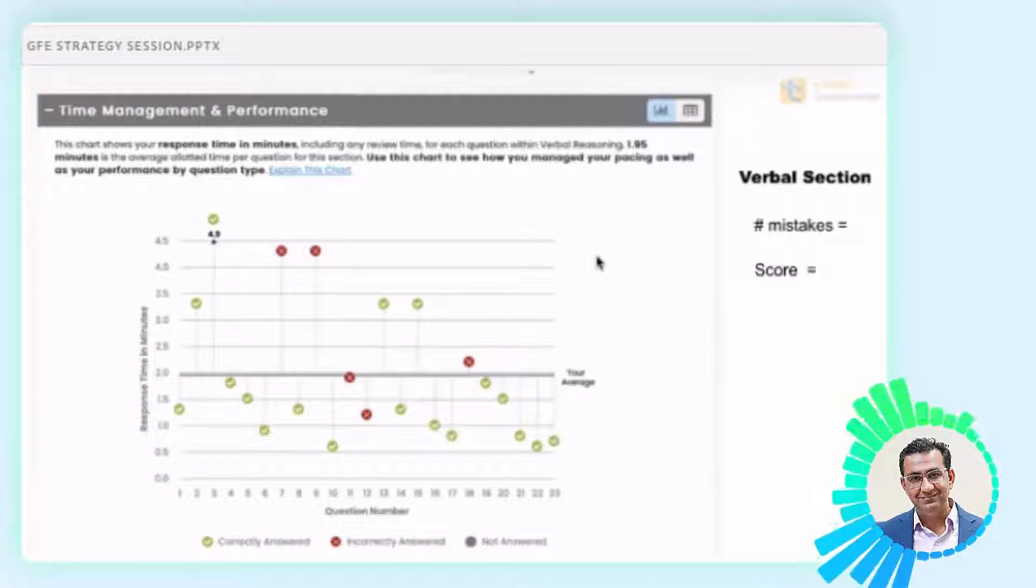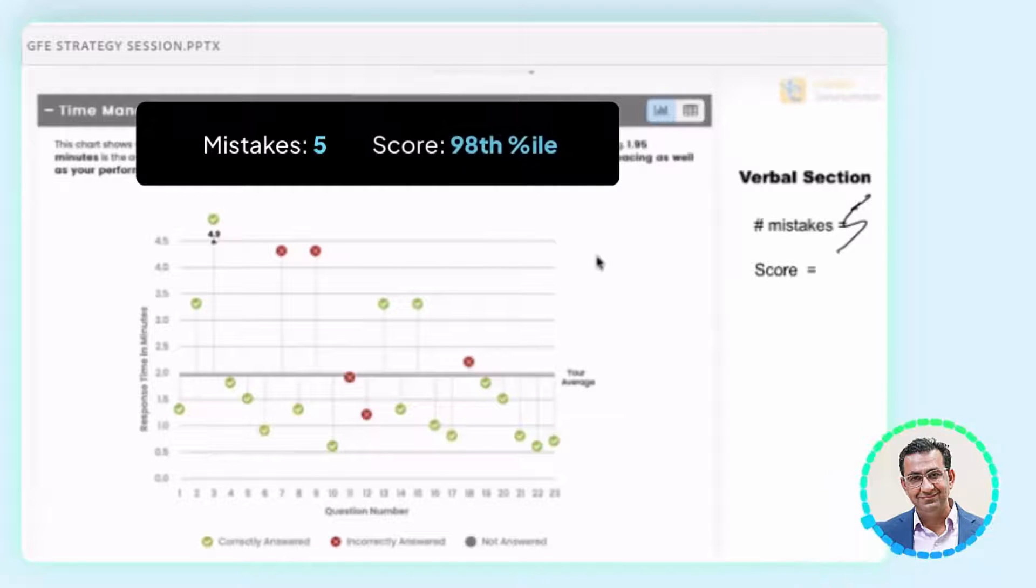Five mistakes. What do you think is percentile score is? 95th, 85th. Okay. 85th percentile. Alright. Lots of people. 90th. 91st. Alright. So this person made five mistakes and his percentile score was 98th percentile. Again, keep in mind the position of these mistakes, but let's kind of move forward here.